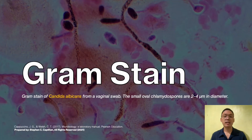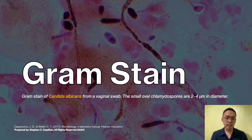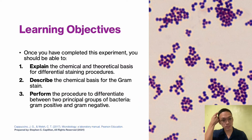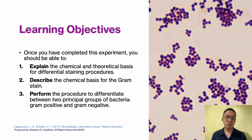In this first lesson we will be learning about gram stains. You'll see here a photomicrograph of Candida albicans from a vaginal swab — notice the colors of pink and purple and the shapes of these microbes. There are small oval chlamydospores which are two to four micrometers in diameter. Once you have completed this experiment, you should be able to explain the chemical and theoretical basis for differential staining procedures and describe the chemical basis for your gram stain.